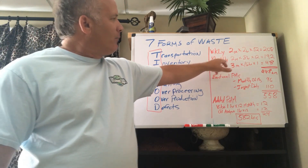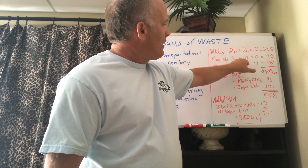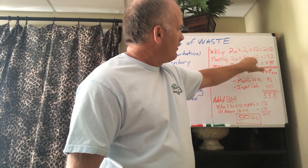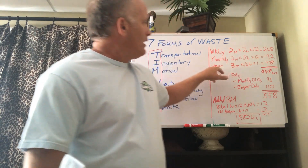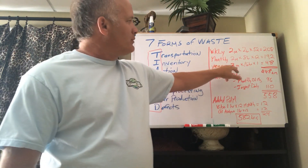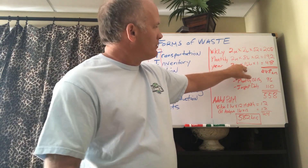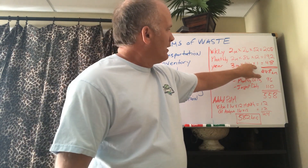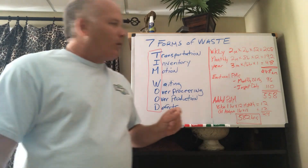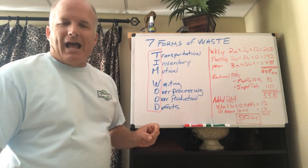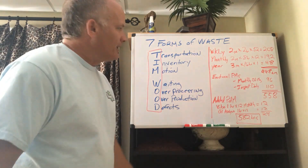Monthly, we had two craftsmen taking the equipment down for eight hours once a month, times 12 — 192 hours. Annual PMs had three people working 16 hours over two shifts, done once a year — 48 hours. So 448 hours total were invested in that asset.